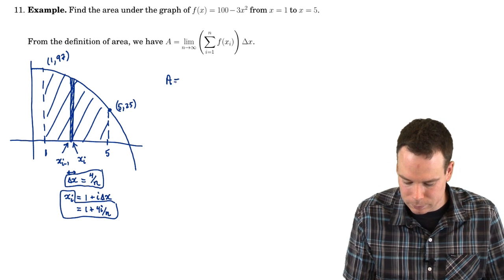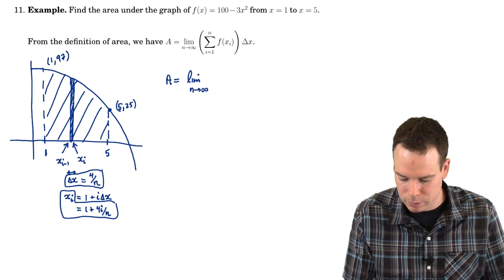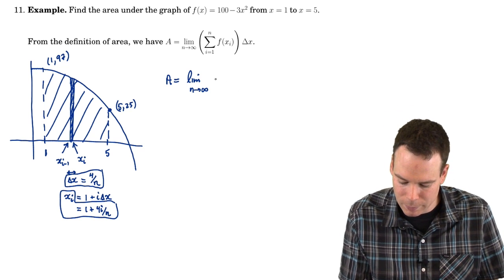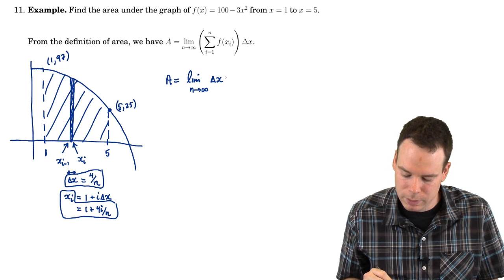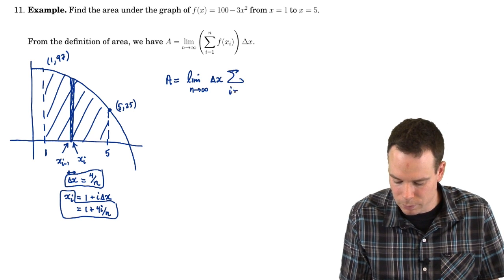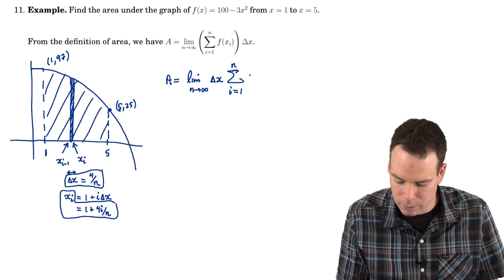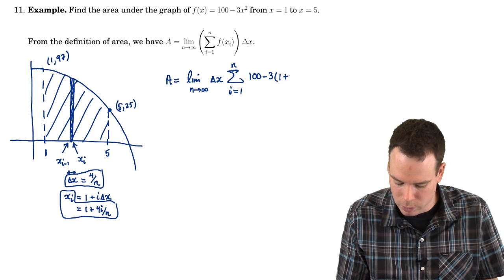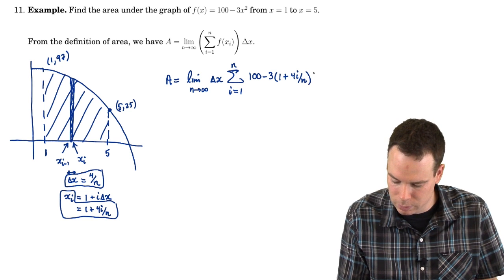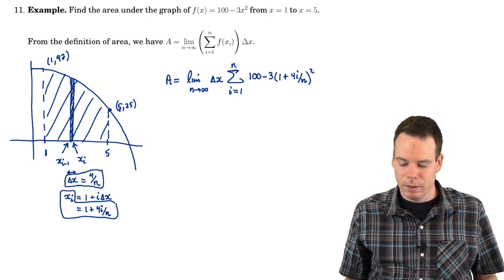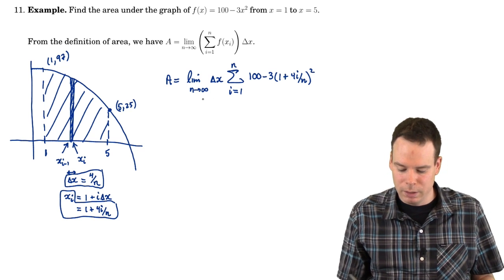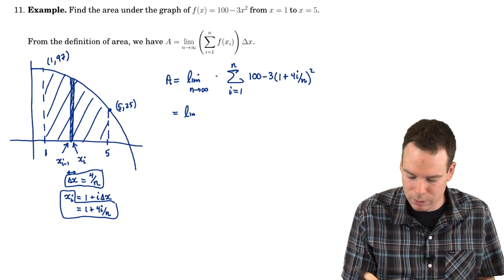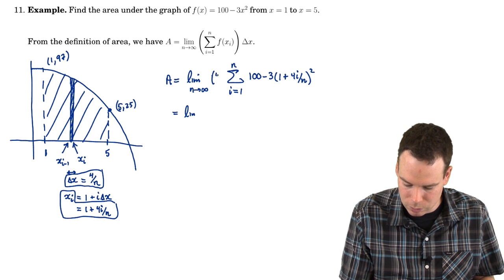The area is the limiting value of the sum of the areas of all the rectangles on the corresponding slices. So it's delta x times the sum from i equals 1 to n of f of x_i — that's 100 minus 3 times x_i squared, where x_i is 1 plus 4i over n, squared. With delta x = 4 over n substituted in, that's the expression we need to find the limit of.